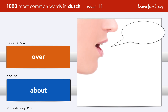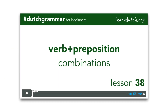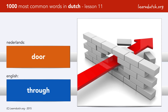Over can also mean 'about'. For example, talking about is praten over. That is what we call a verb-preposition combination, which I will explain in lesson 38 of the online course Hashtag Dutch Grammar. Just like in English, many verbs can only be combined with one specific preposition — you need to learn that by heart. Door.